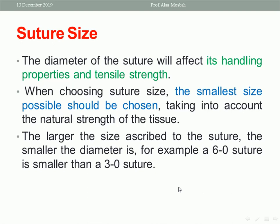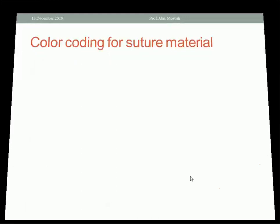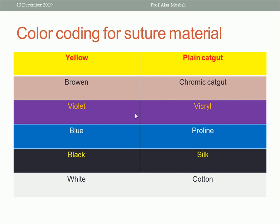What about the color coding for suture material? From this table you can see: yellow suture like Plain catgut, brown suture like Chromic catgut, violet suture like Vicryl, blue like Prolene suture, black like silk suture, and white like cotton.